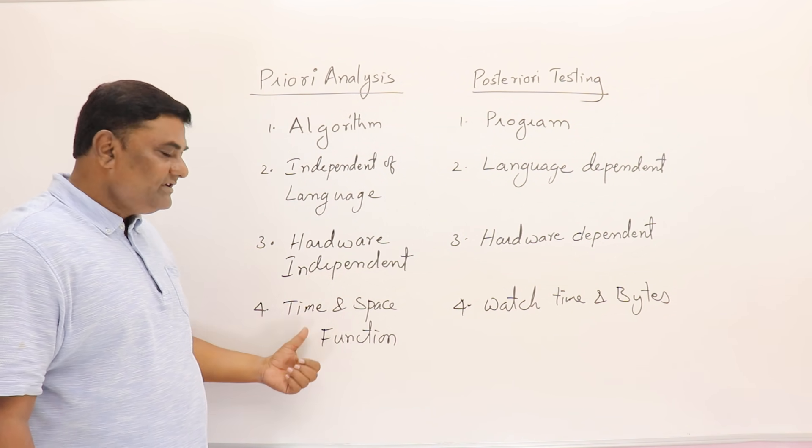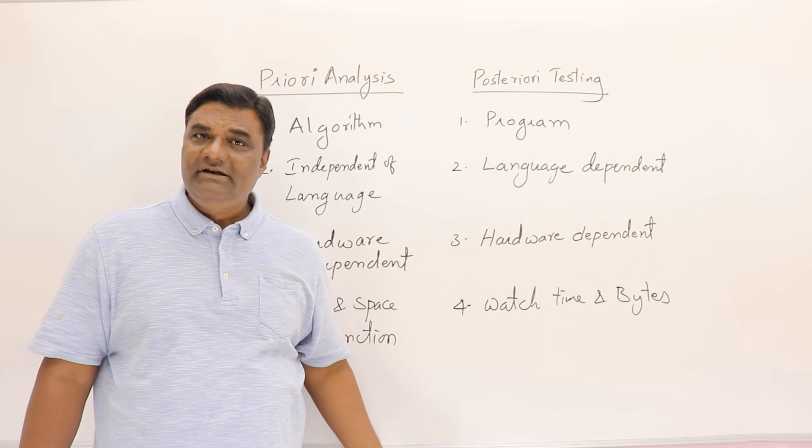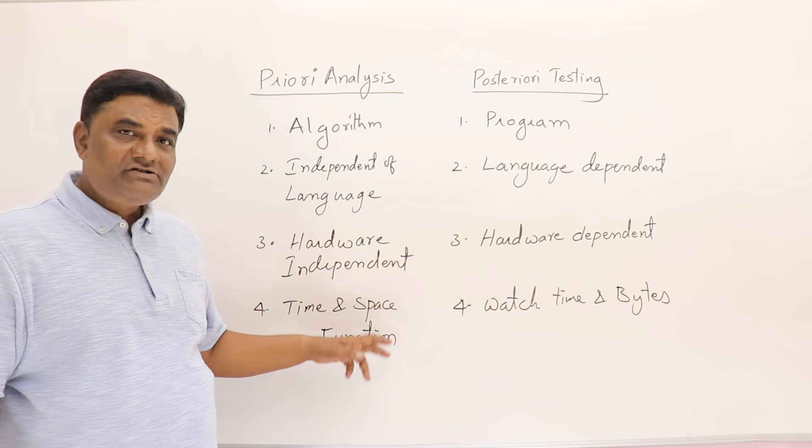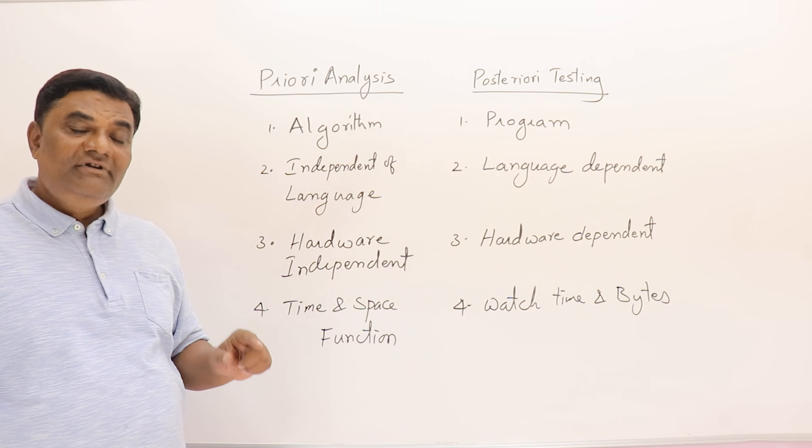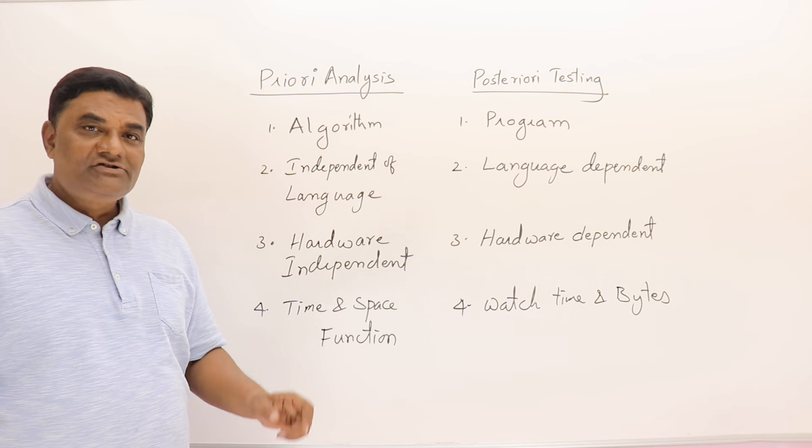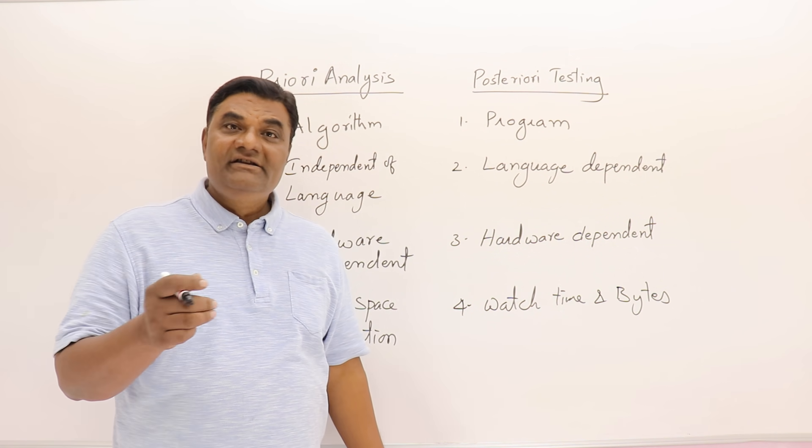The result of priori analysis - we don't get actual time like 3 minutes, 10 minutes, 5 seconds, or milliseconds. No, we will get the time function and we get the space function.